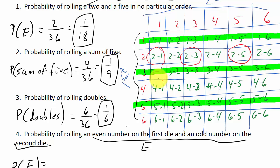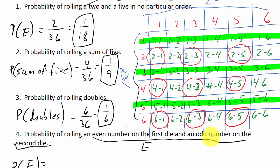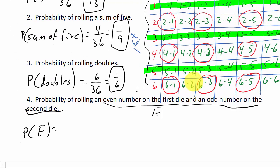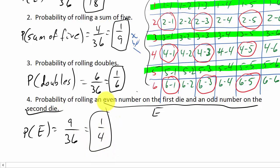Going through the remaining columns where the first die is even (2, 4, 6), we look for odd values on the second die (1, 3, 5). Counting all those pairs gives us 9 successful outcomes over 36 possible outcomes, which simplifies to 1 fourth.